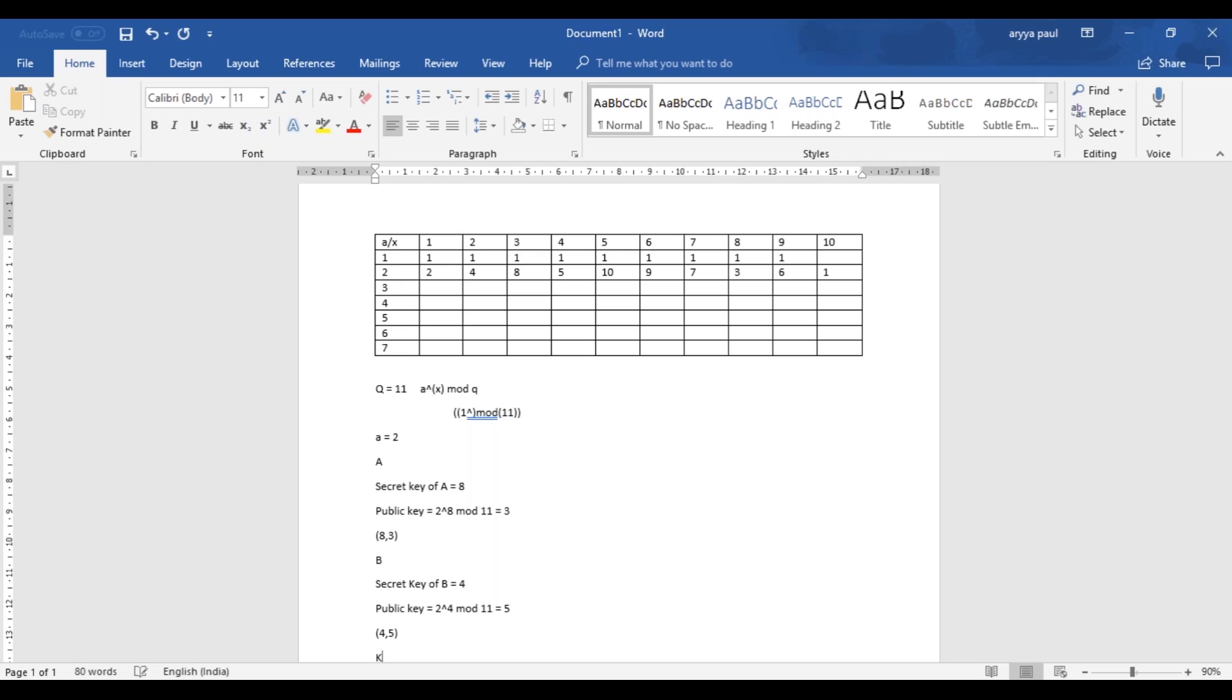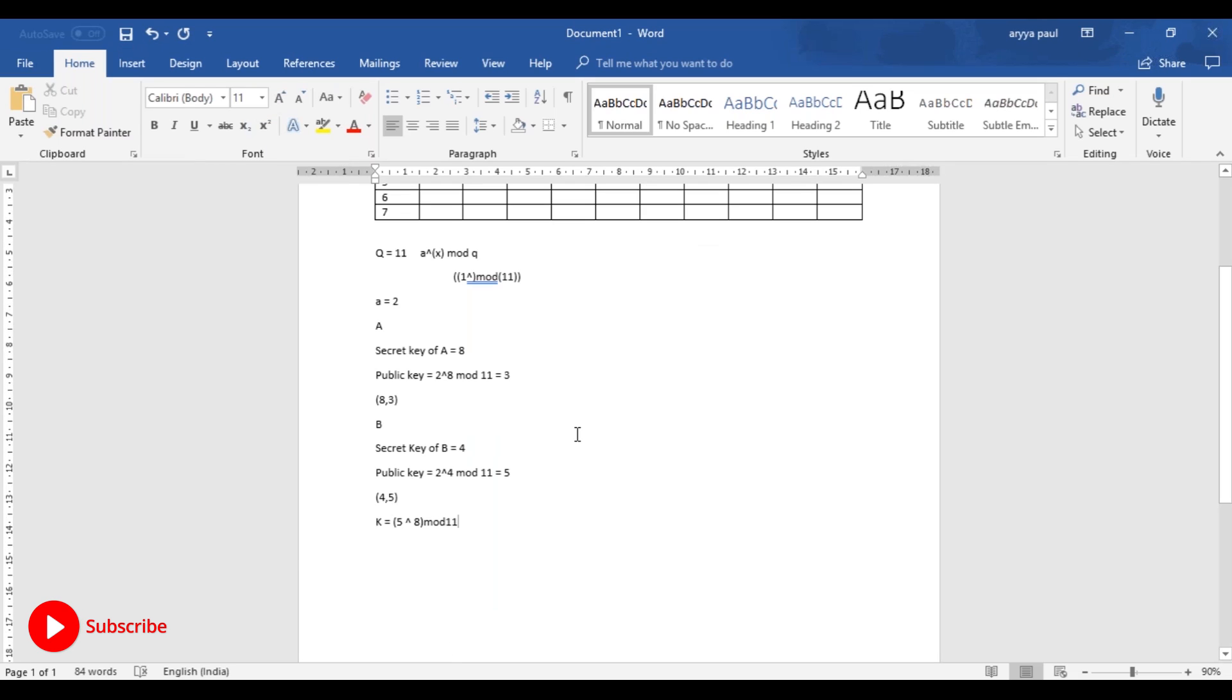For generating the key, the formula is the public key of B, which is 5, raised to the private key of A, which is 8, and the whole thing has to be mod by 11. So the key generation will be given by 5 raised to 8 mod 11. 5 raised to 8 is 390,625. When you mod that by 11 you get 4.